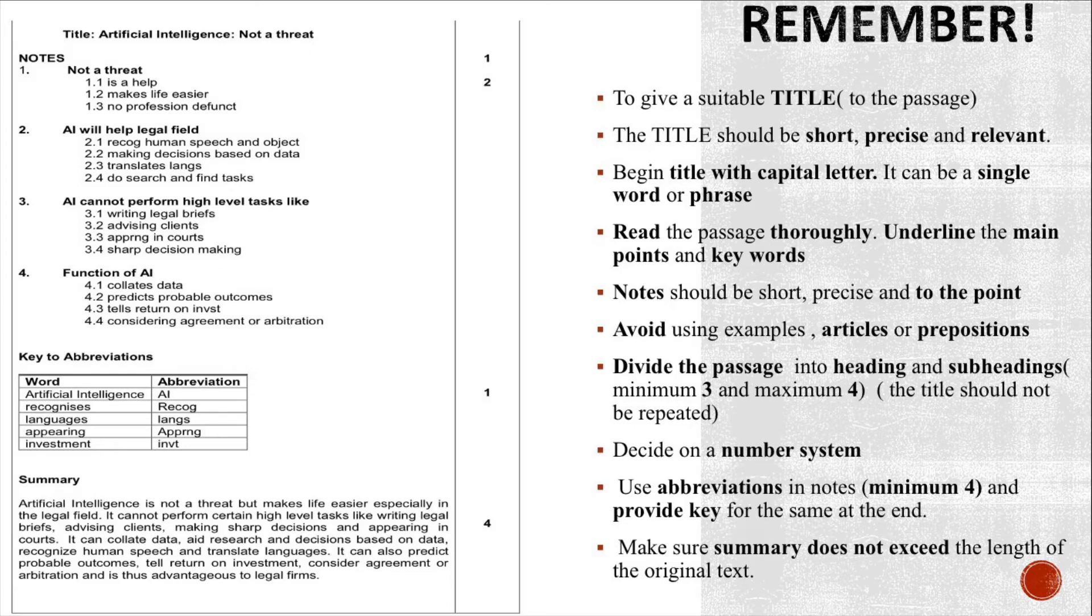Also check the indentation in the notes, which means leaving space at the beginning of the line. First write the title, then write down the notes in logical order from the main headings to the subheadings. The numbering should be spaced a little to the right for more clarity. You can go through the given picture and see how subheadings are slightly shifted towards the right. Always use abbreviations in the notes, minimum four, and provide key for the same at the end.